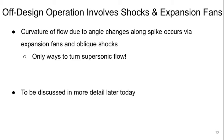Any time we're dealing with off-design operation in this kind of nozzle — really in any supersonic nozzle, but it's particularly important here — we're dealing with shocks and expansion fans in the supersonic flow. The curvature of the flow due to the angle changes along the spike occurs via a series of expansion fans and oblique shocks. These are the only ways to turn a supersonic flow: if you want to turn a supersonic flow while slowing it down, you use an oblique shock; if you want to turn it while speeding it up, you use an expansion fan. We're going to talk about these phenomena in more detail later today.